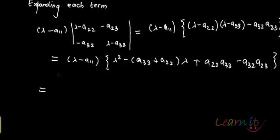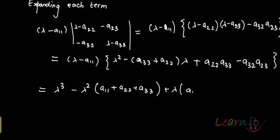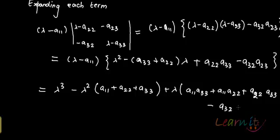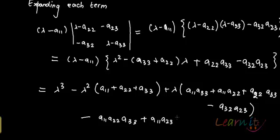If I completely multiply through with (λ minus A11), we get: λ³ minus λ²·(A11 plus A22 plus A33), then λ terms of A11·A33 plus A11·A22 plus A22·A33 minus A32·A23, and then the constant terms which are minus A11·A22·A33 plus A11·A23·A32.